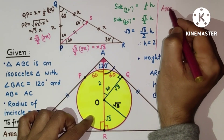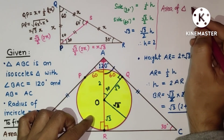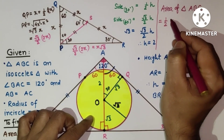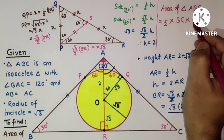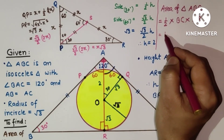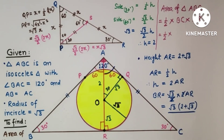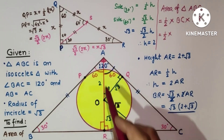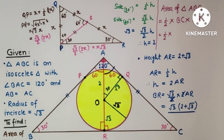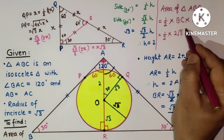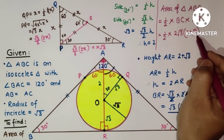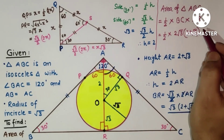Area of triangle ABC equals half into base BC into height AR. We found BR as root 3 times (2 plus root 3). Since R is the midpoint of BC — because in an isosceles triangle the perpendicular from the apex bisects the base — BC equals 2 times BR equals 2 root 3 times (2 plus root 3). Area equals half times 2 root 3 times (2 plus root 3) times (2 plus root 3), and the 2s cancel.